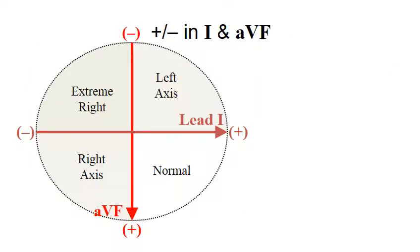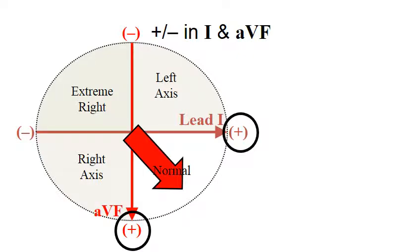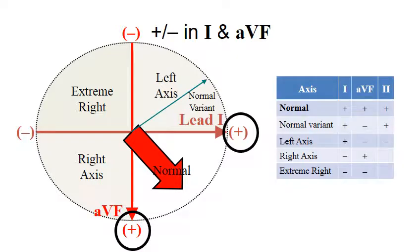In summary, you have lead one and foot. Normal would be positive-positive, and normal variant would be positive-negative but two is positive. So you could imagine if both one and two are positive regardless of what foot is doing, that is considered normal. Other combinations you can read. So let's do one example with my ECG.